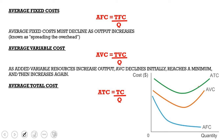Average fixed cost equals total fixed cost divided by quantity. AFC must decline as output increases — this is known as spreading the overhead — because your fixed cost is spread over a larger output. Average variable cost equals total variable cost divided by quantity; it declines initially, reaches a minimum, then increases again. Average total cost equals total cost divided by quantity, or equivalently, average fixed cost plus average variable cost.